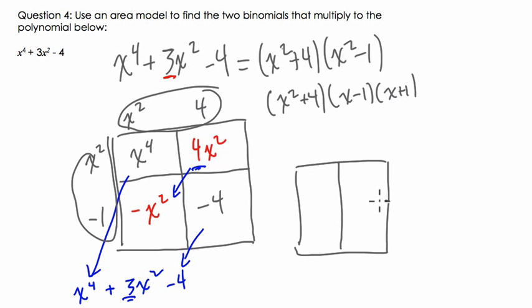So for x squared minus 1, if we do the same process, if we put x squared here, that's x by x. And then minus 1, that's just 1 times negative 1. And here you can see that's x plus 1 times x minus 1 is x squared minus 1. It's this area in here.